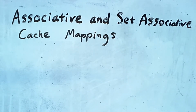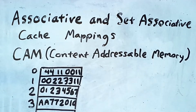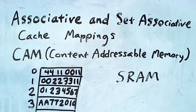Before talking about these cache mapping schemes, I'll talk briefly about Content Addressable Memory. Content Addressable Memory is a special type of expensive static RAM that allows you to look up the address of particular contents in memory.